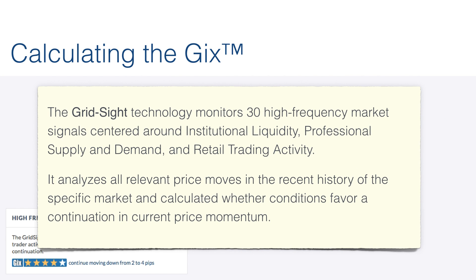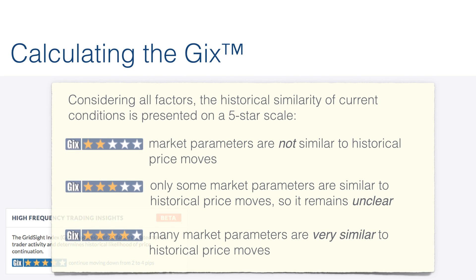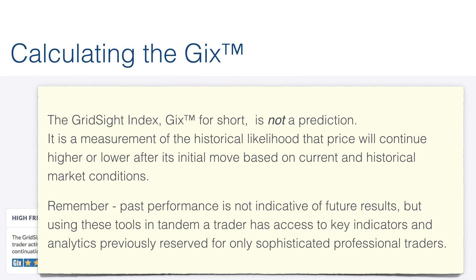Finally, we use all of these factors to calculate the GIX, monitoring 30 high-frequency market signals centered around four factors: liquidity, retail trader volume, the balance of liquidity, and whether traders are buying and selling — ultimately showing the historical similarity of current conditions on a five-star scale. It's not a prediction; it's a measurement of the historical likelihood that price will continue higher or lower, and it is continuously calibrated on recent price behavior. As such, we believe it will never grow stale and will center itself on what has recently moved the market.